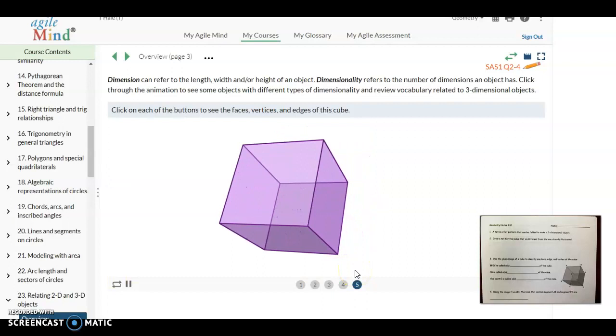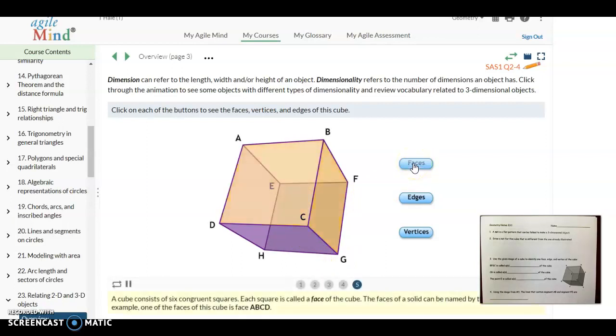So we're going to review some vocabulary that we have learned with 3D figures. First of all, faces. Faces are the flat surfaces of the prism or whatever 3D object you have. So this cube has six faces. It has one at the top, one at the bottom, and four along the sides. And each one of those faces in a cube is a square.